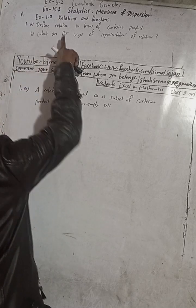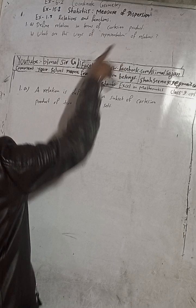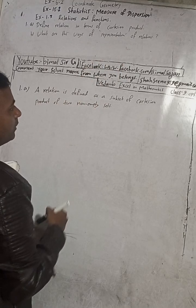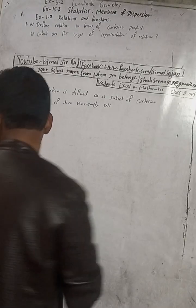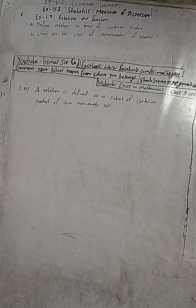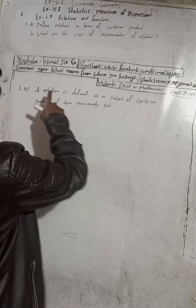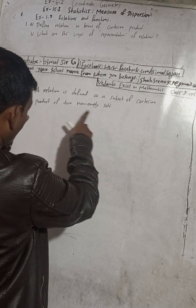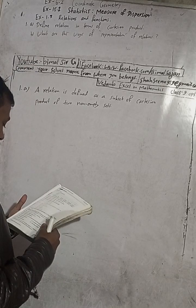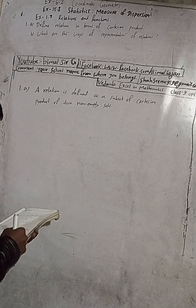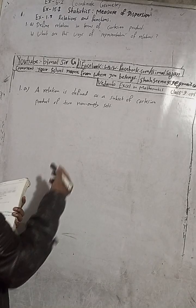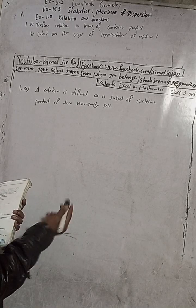Okay, what is relation? So relation in terms of cartesian product can be written as: a relation is defined as a subset of cartesian product of two non-empty sets. So this is a simple definition of relation in terms of cartesian product. No need to give an example.